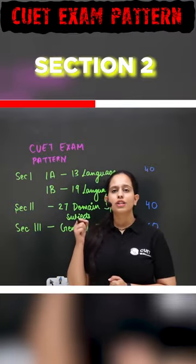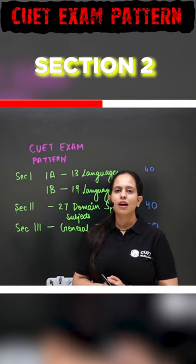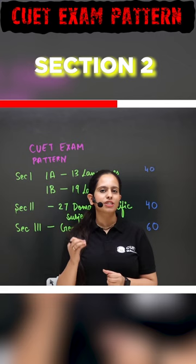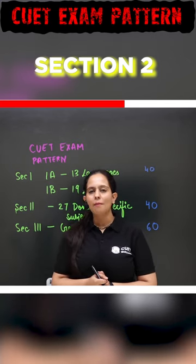Next is Section 2. Section 2 is related to your domain-specific subjects. There are 27 different subjects and you can choose six subjects.